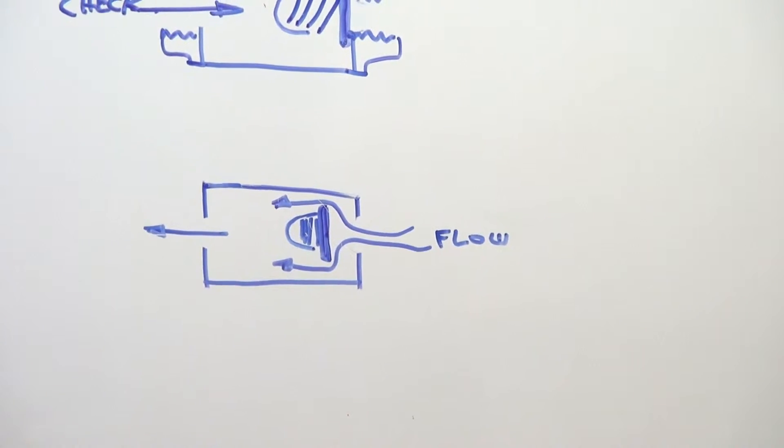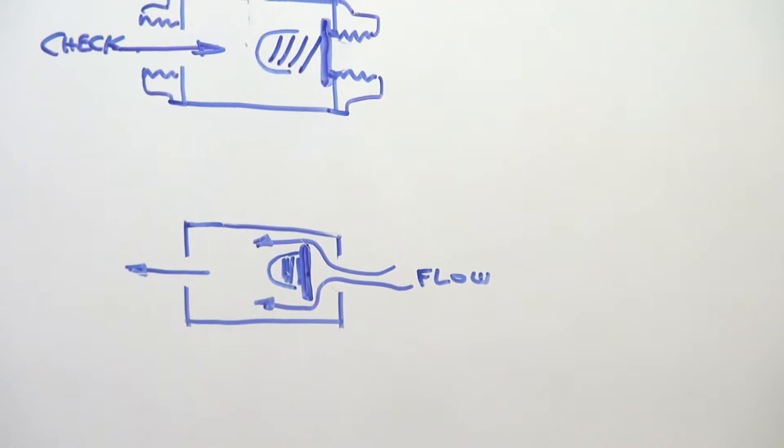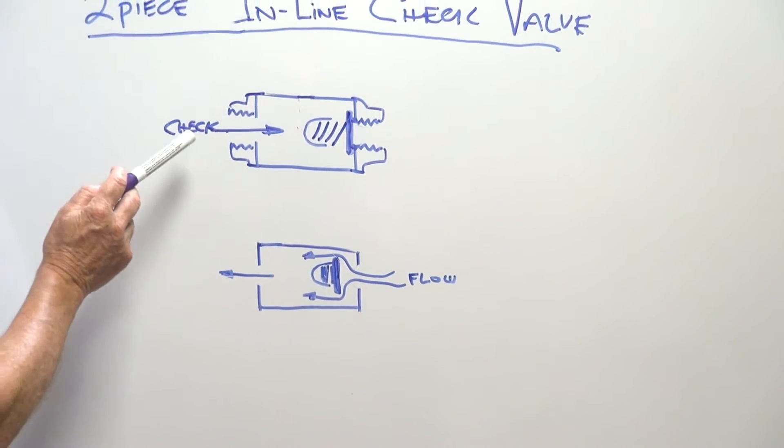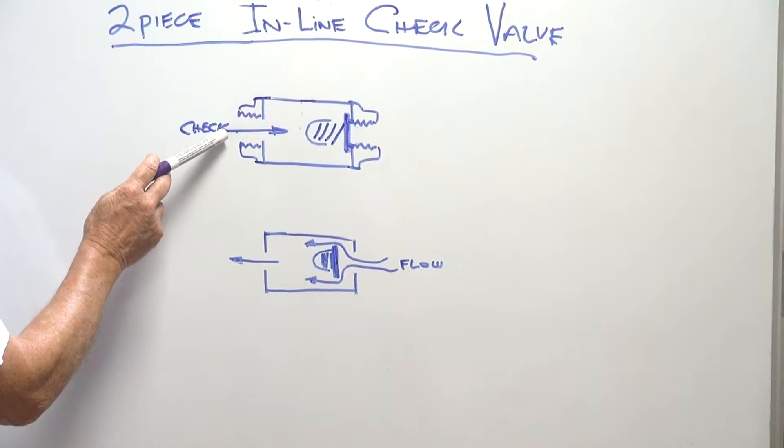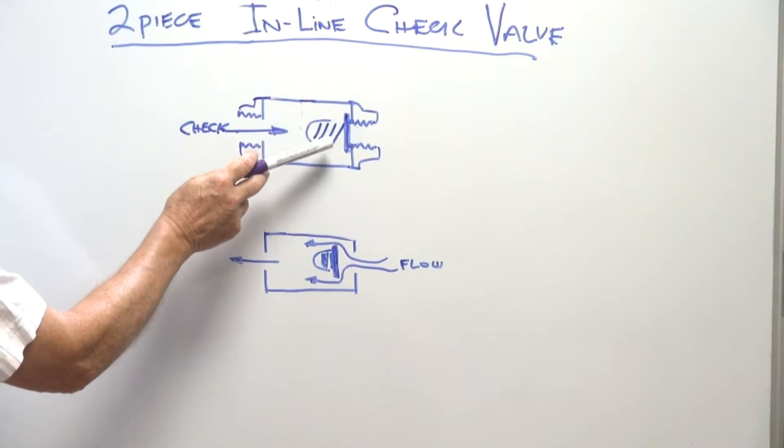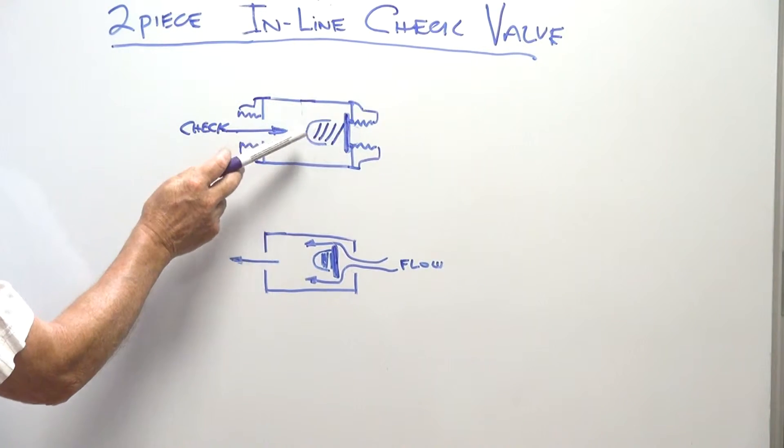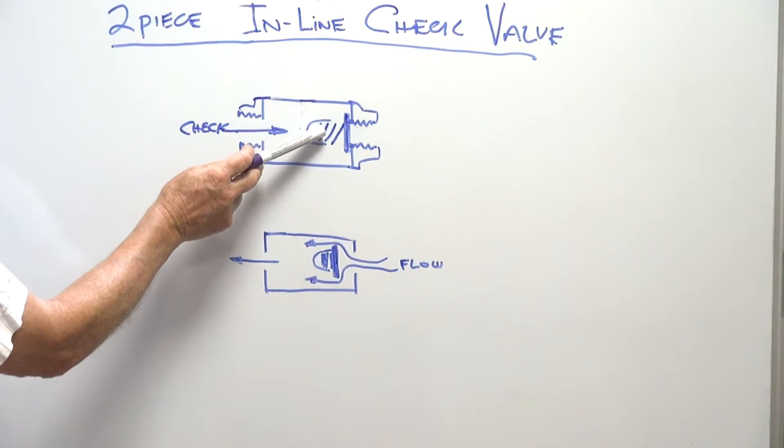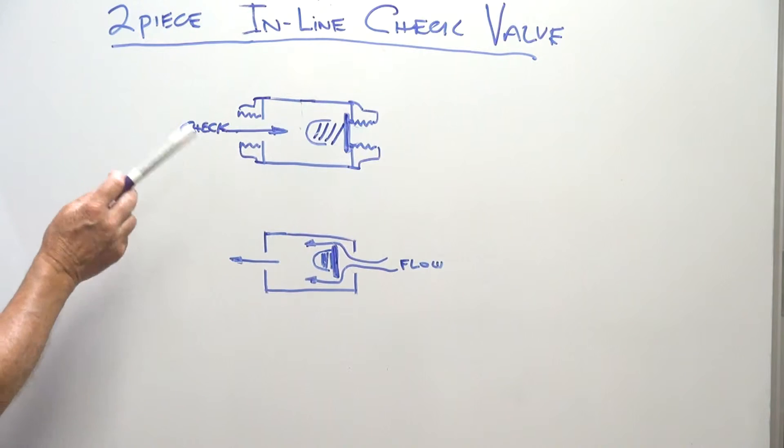I've drawn some sketches up here on the board showing the unit. Standard 316 steel two-piece. In this direction here, we've got the check assembly. There's the metal face seat which is against the body itself, and a spring-loaded cartridge behind it, so any direction